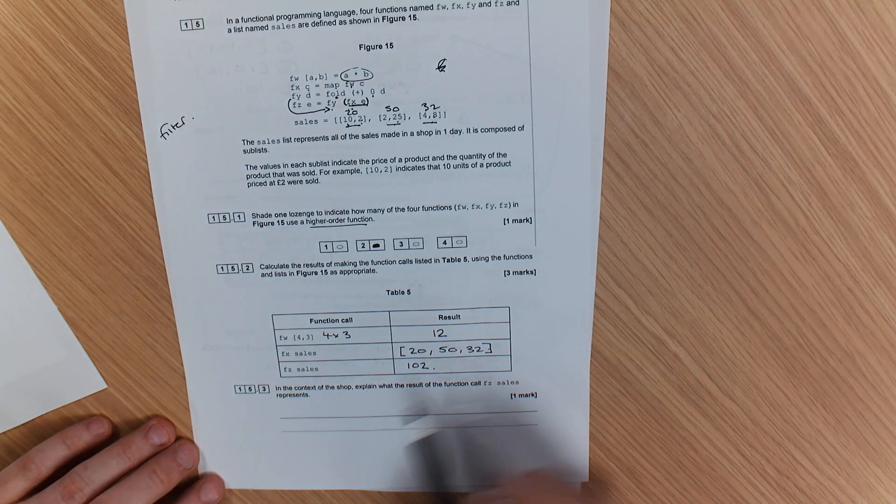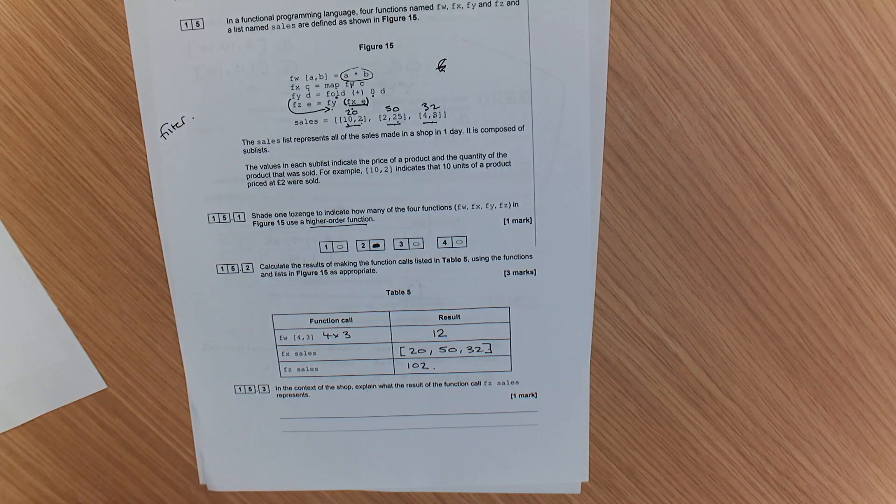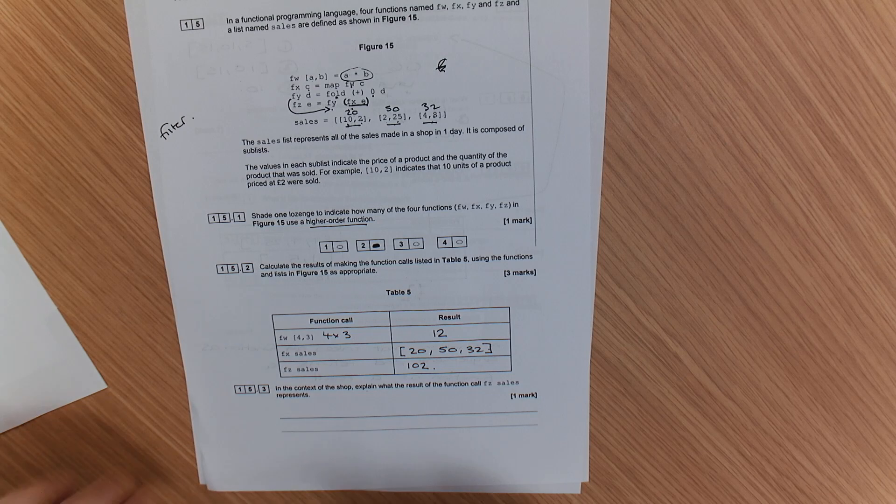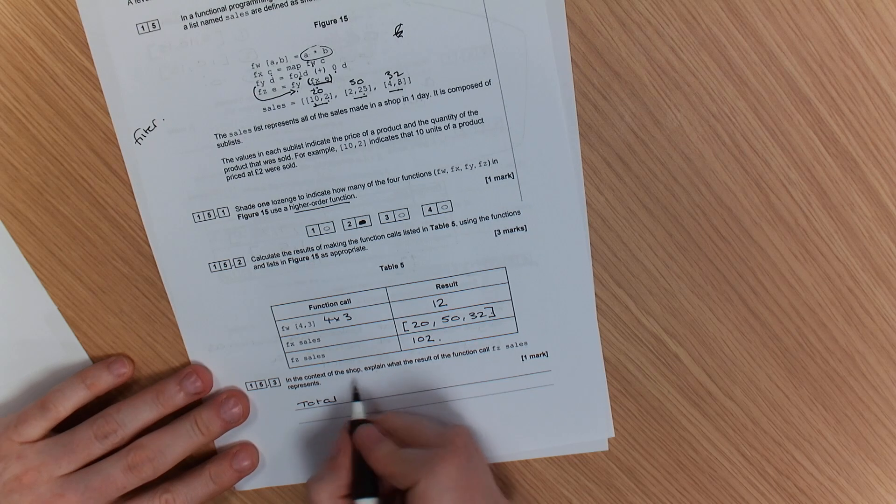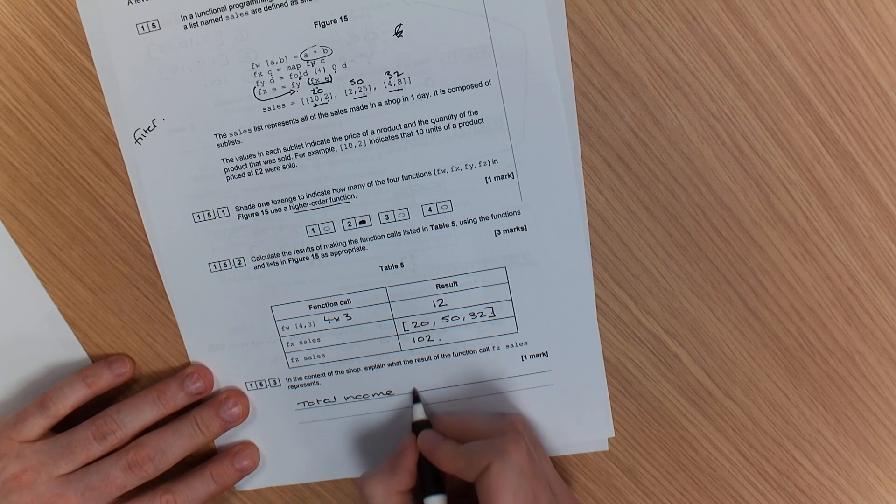Now, in the context of the shop, explain what the result of the function call FZ(sales) represents. Well, it is the total of, it is the total income for all products.